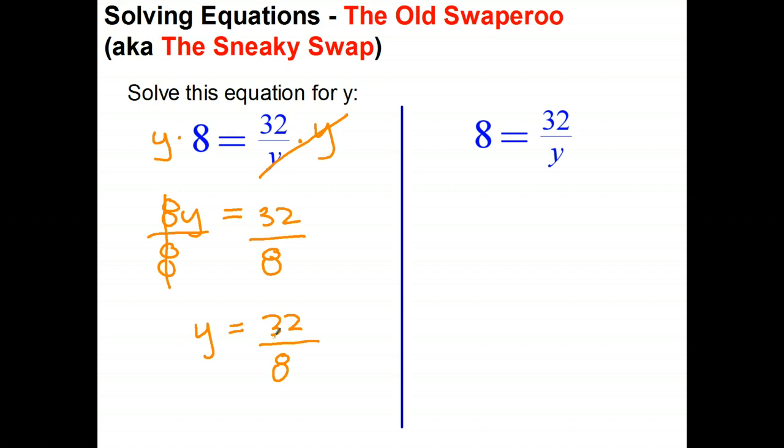I started with that. The 32 started on the top, the 32 is still on the top. The y was on the bottom of the fraction on the right, it's now moved to the left and basically it's on the top of a fraction because that's really like y over 1. The 8 which was on the left has gone to where the y used to be. So the quick way to solve equations like this is to basically say I can just swap the y and swap the 8, and that's why it's called the old swaperoo or the sneaky swap.